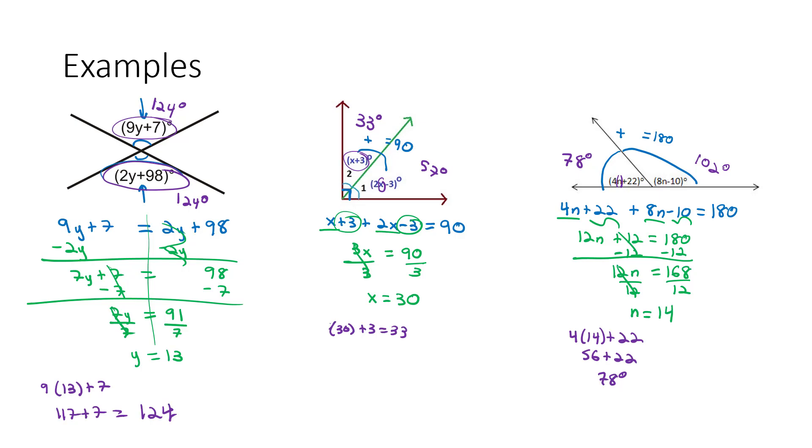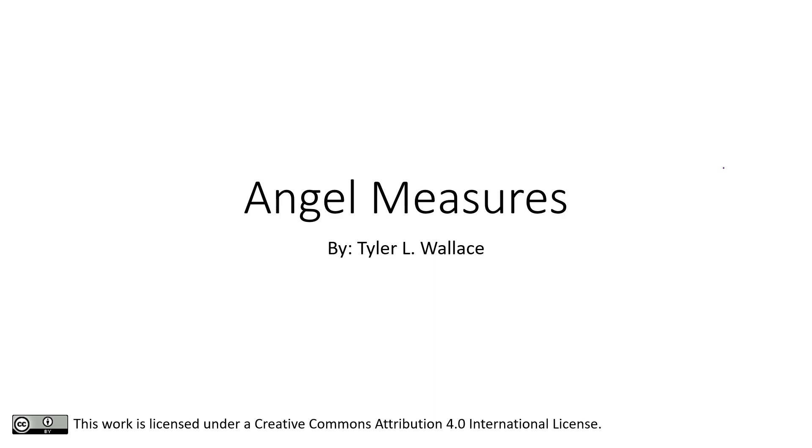The algebra should be a review from algebra 1. What we're focusing on today is angle measures. Vertical angles are congruent. Across from each other, they're the same. Complementary angles add to 90, and supplementary angles add to 180. Take a look at the homework assignment, and let your instructor know if you have any questions.